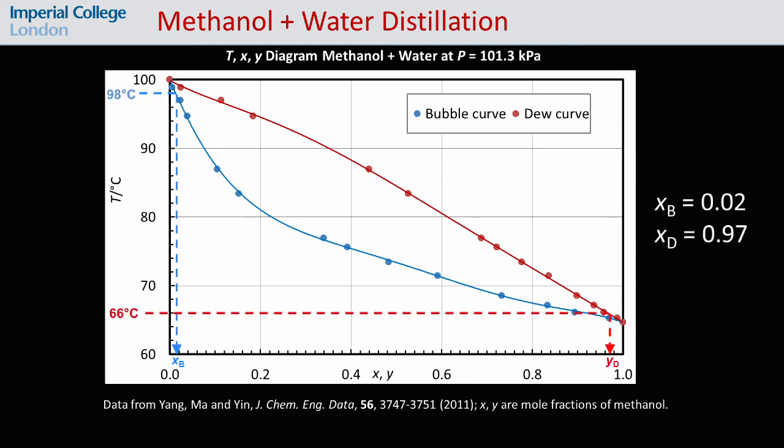The temperatures were 98 degrees C in the reboiler and 66 degrees C at the top of the column, and so we find that XB equals 0.02 for the mole fraction of methanol in the liquid in the reboiler, and YD equals 0.97 for the mole fraction of methanol in the vapor leaving the top of the column. The latter is equal to the distillate composition XD because we have a total condenser.